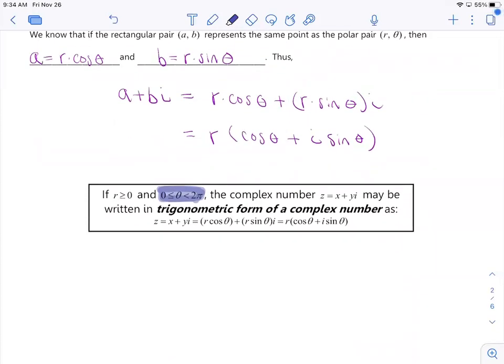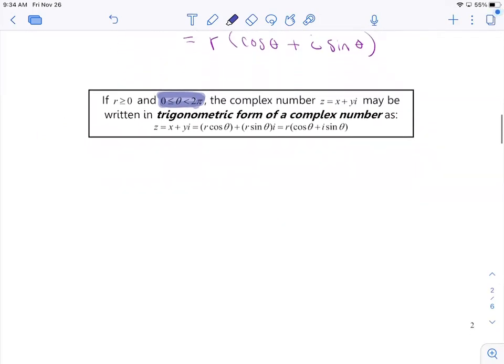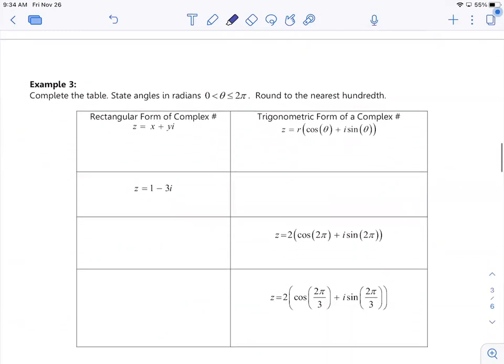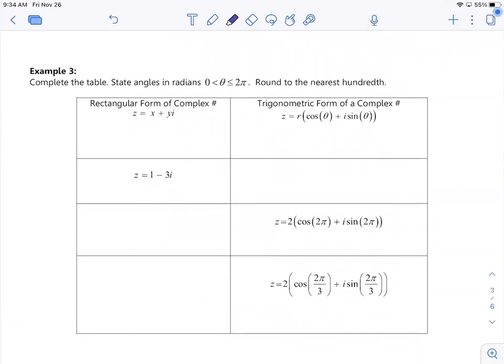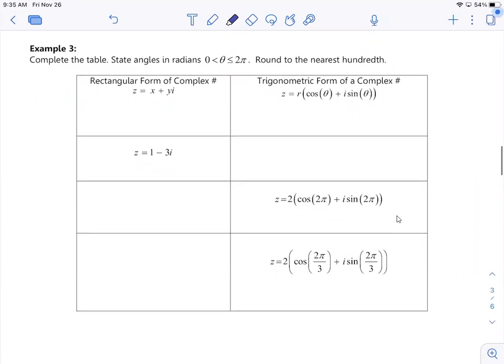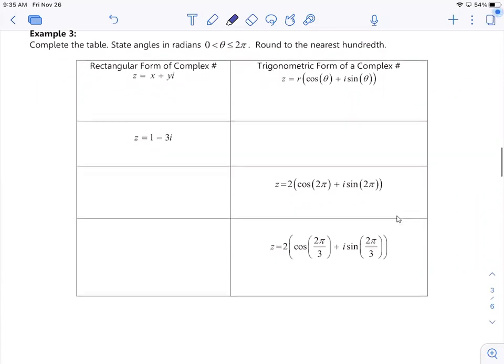So knowing this, we're just going to get some practice writing between two different forms. My job here is just to expose you to these complex numbers and complex planes, and you'll start to really use them in your future math courses. So you have example three. You have this table here, and I'm giving you the rectangular form. So that first one is z equals 1 minus 3i. You have this complex number in rectangular form.